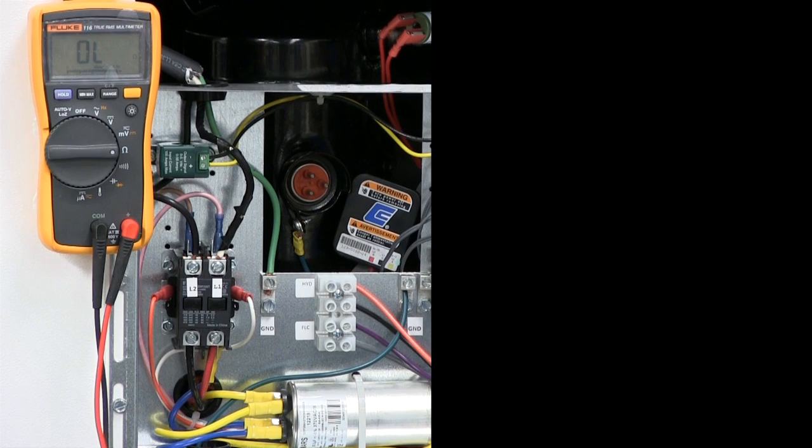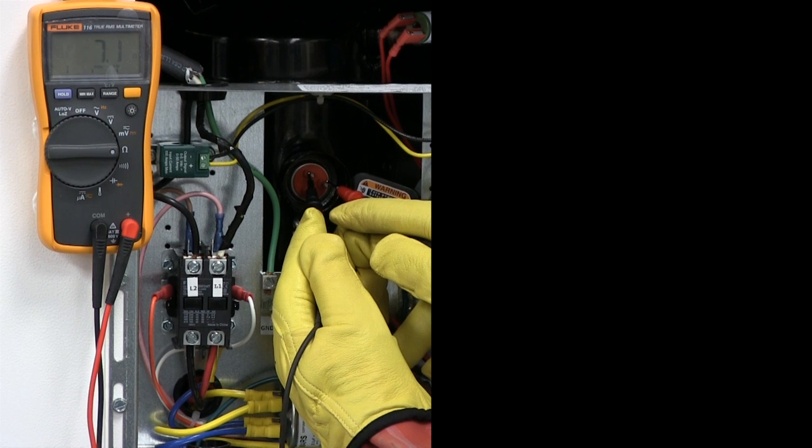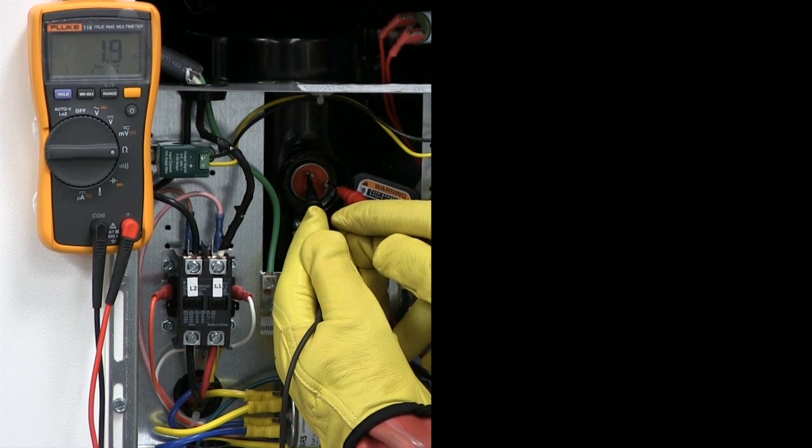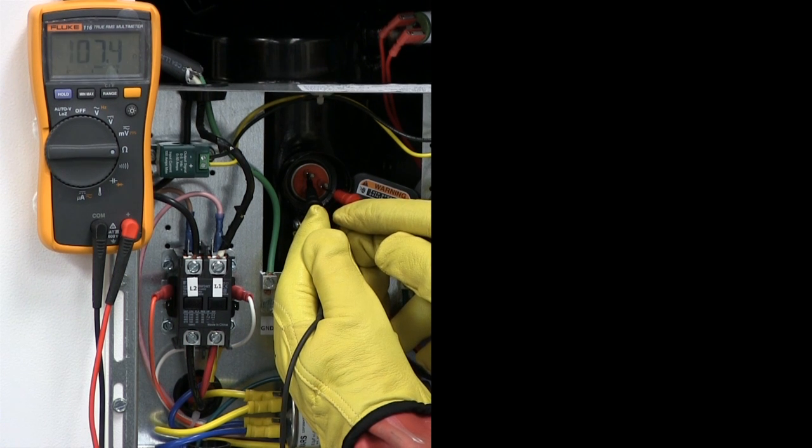You'll want to put your meter on the lowest ohm setting and check the resistance between the common and the start winding. It should be between 1 and 3 ohms. As we can see on the meter, we're looking at about 2 ohms, so that one's good.